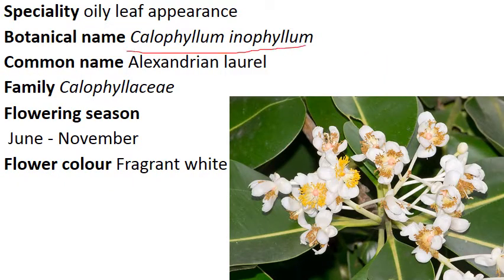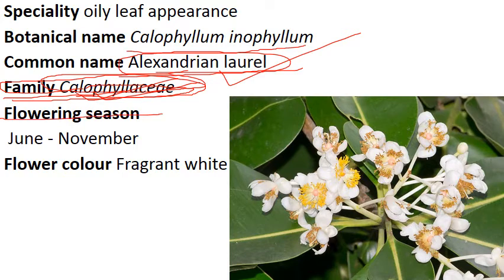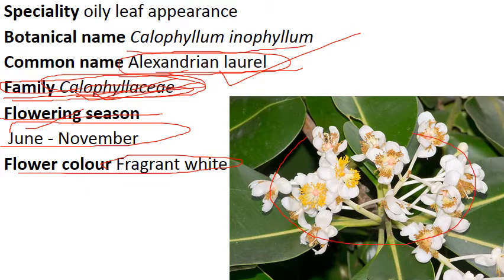Next comes Calophyllum inophyllum. Common name is Alexandrian Laurel, generally called Laurel tree. Family is Calophyllaceae — the family name will rarely come in exam because you can easily see Calophyllum belongs to Calophyllaceae. However, it may come that Alexandrian laurel belongs to which family, so you should remember Calophyllaceae. Flowering season is June to November — a wide range. Flower color is fragrant white; you can see the white color and it has a very good smell. Specialty: oily leaf appearance — the leaf looks oily but actually no oil is present. It is a biodiesel plant.